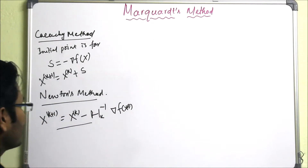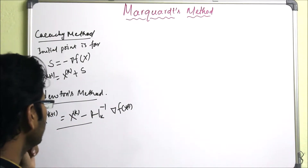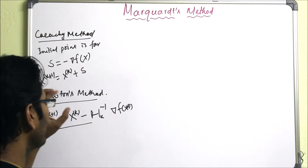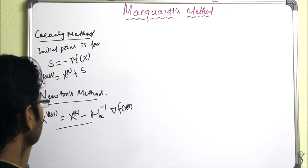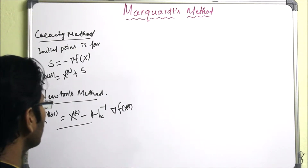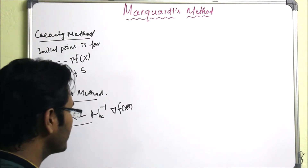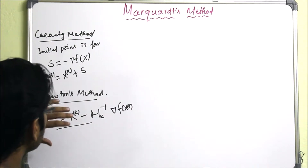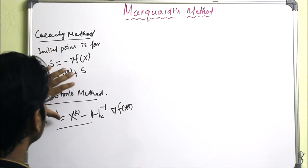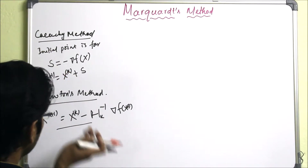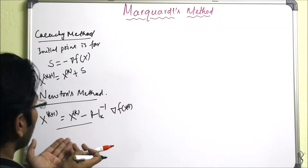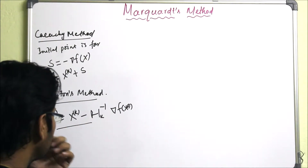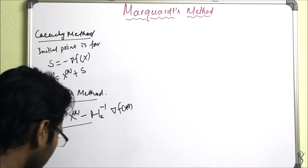We have an initial point but we don't know if it is far from the minimum or close to it. So we need another method — we can hybridize the two methods to form a new method. That new method is called the Marquardt method.